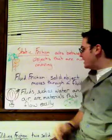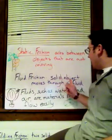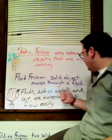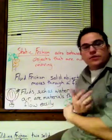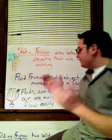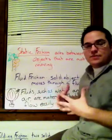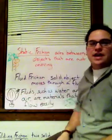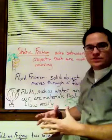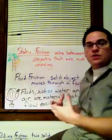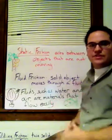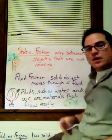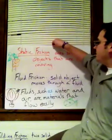Another type of friction is fluid friction, where a solid object moves through a fluid. Fluids, such as water and air, are materials that flow easily — fluid isn't just something you drink. Air is actually a fluid; it takes the shape of the container it's in. For example, a hot air balloon in the sky experiences fluid friction — the air resistance to its motion. A fish swimming in water also demonstrates fluid friction, as the water acts as friction against the fish.